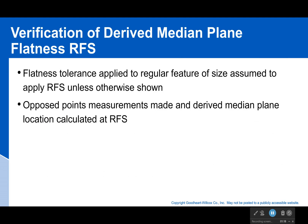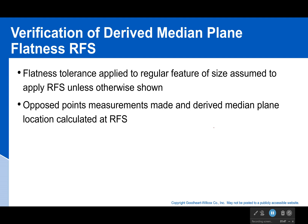How do we verify the derived median plane when it's at RFS — regardless of feature size? We don't get that nice thing where we can make a gauge; that only happens with the max material condition. The only way to do this is to take point measurements. Usually you can use a coordinate measuring machine to help automate this process, and from that you can derive where the median plane is and determine if it's flat. It's not terrible, but not super easy either. This is probably a lot better in many cases than trying to do flatness of a surface, because you can automate it very quickly with a computer, while you would have to do a lot of reorienting with a surface.